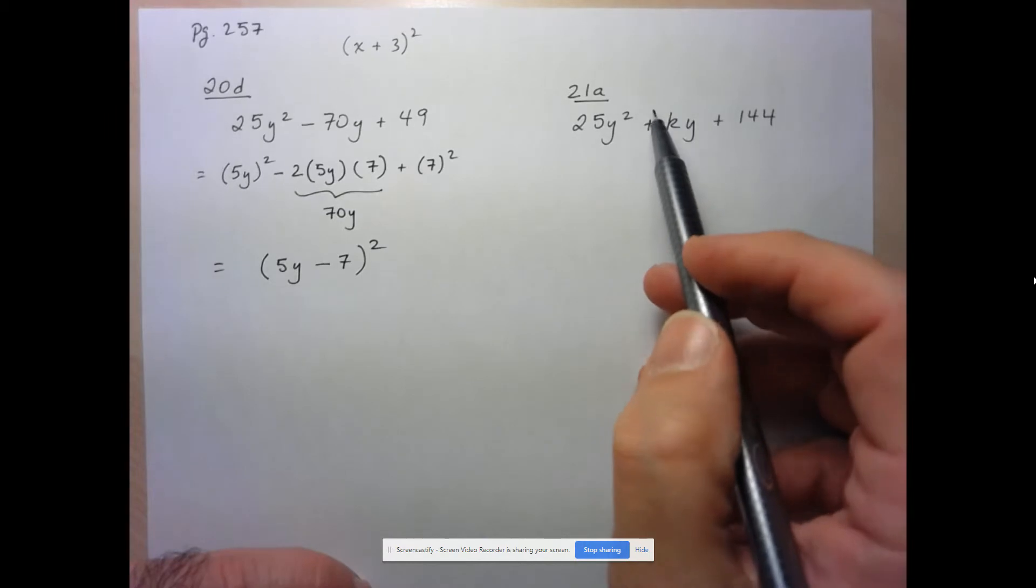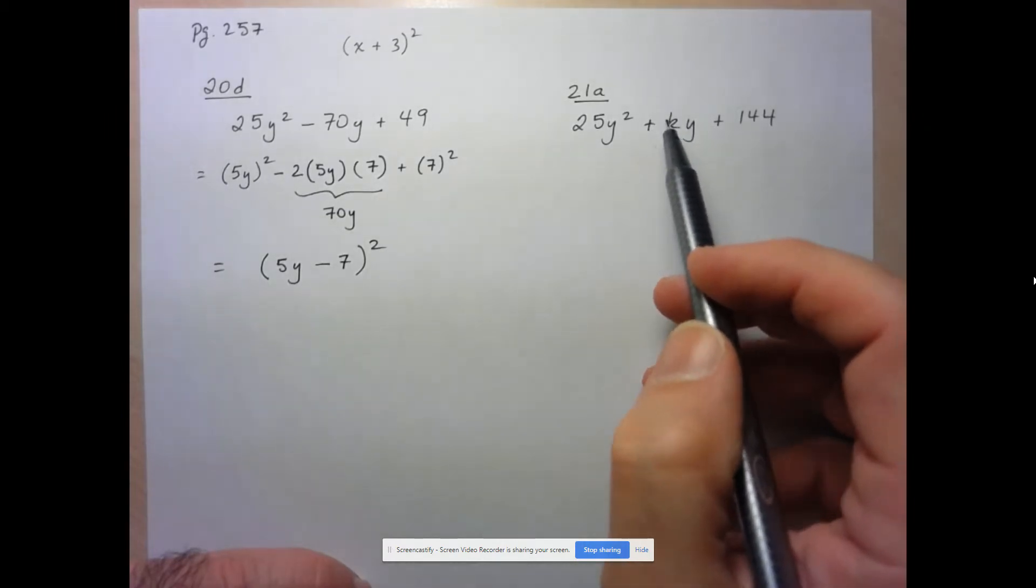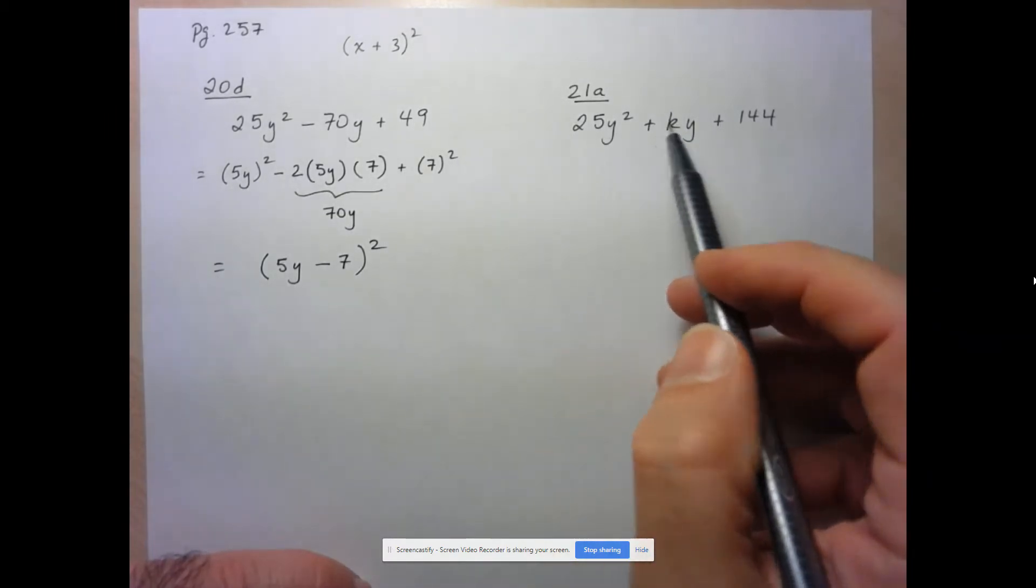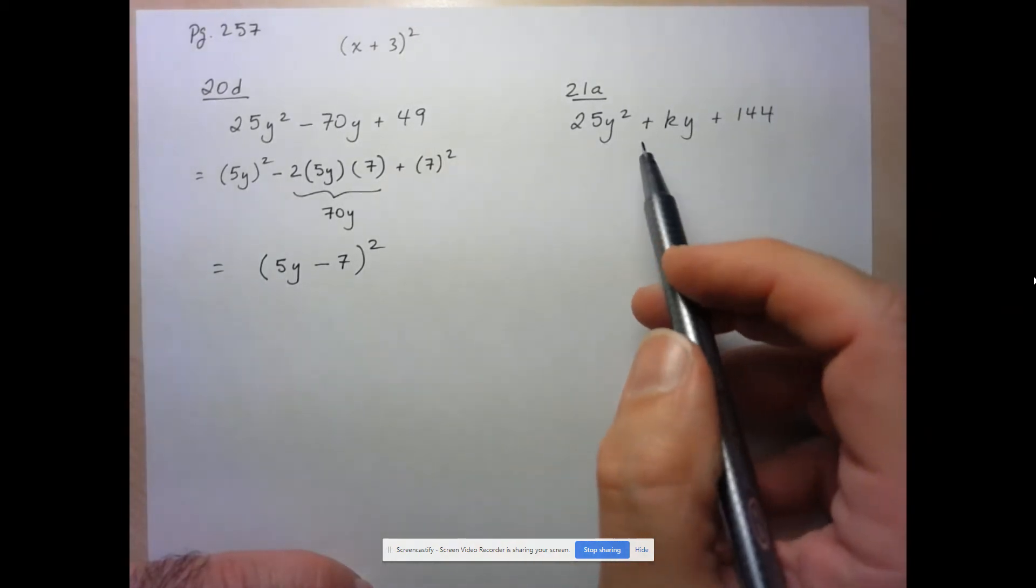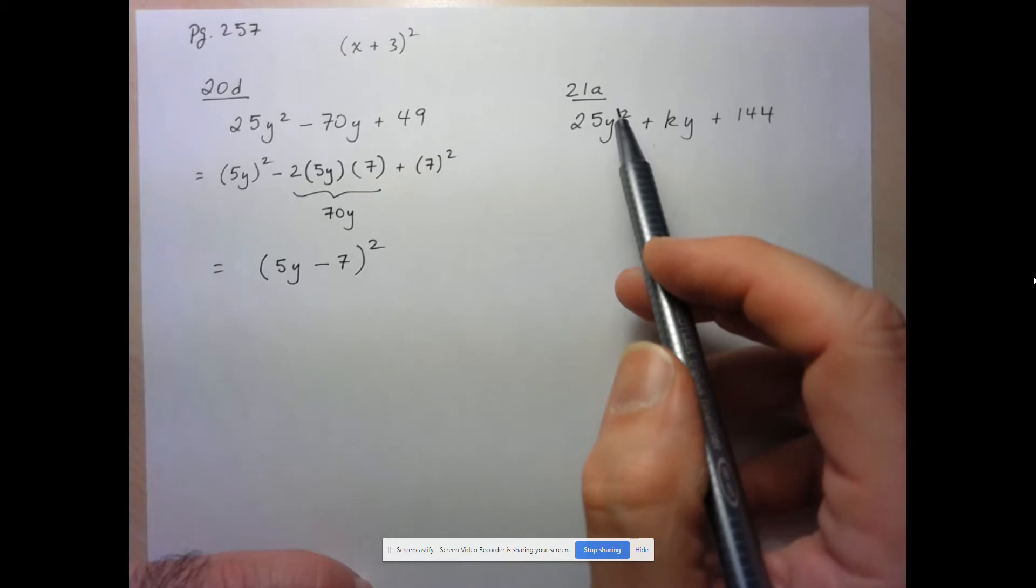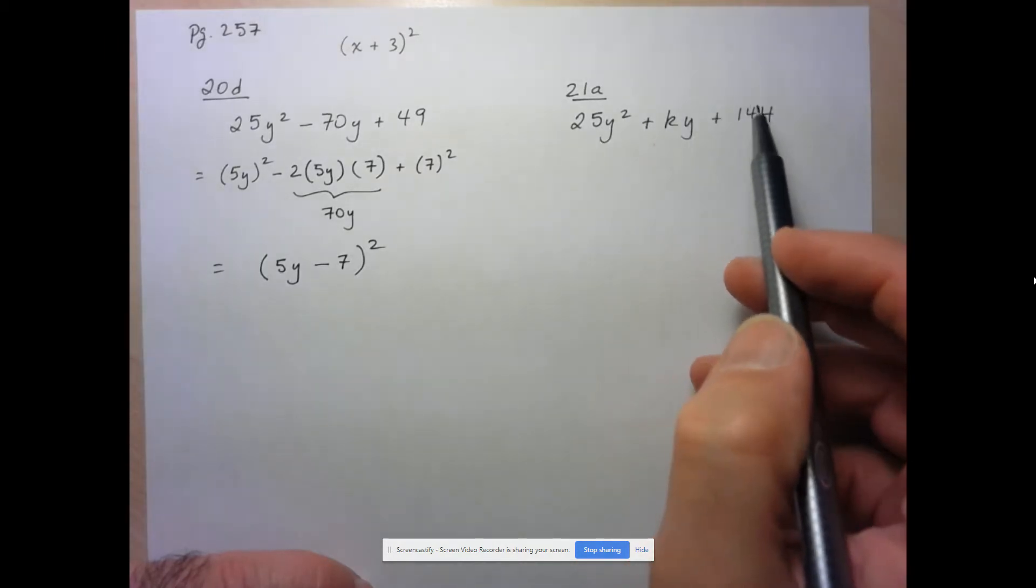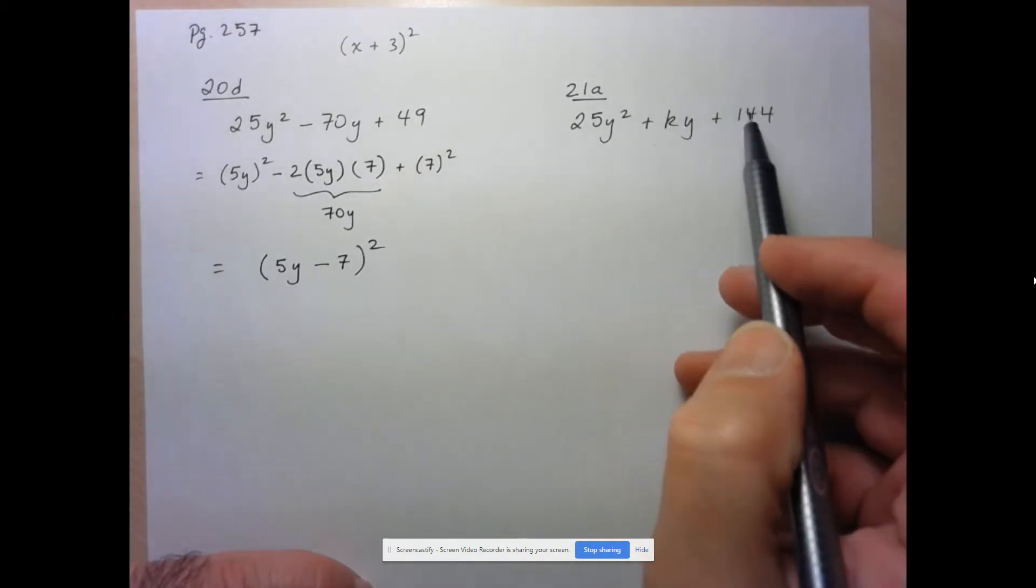They want us to find all the possible k values that's going to make this a perfect square trinomial. So again, the fact that this even has a chance of being a perfect square trinomial is because the first and final terms are both perfect squares.